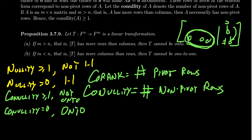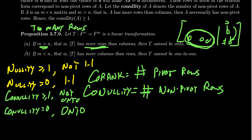Consider a special case: suppose T goes from Fⁿ to Fᵐ. If M is bigger than N — meaning the matrix has more rows than columns — then T cannot be onto. Having too many rows means that when you row reduce, you'll inevitably get a row of zeros, which implies the co-nullity is positive, and so the transformation can't be onto.